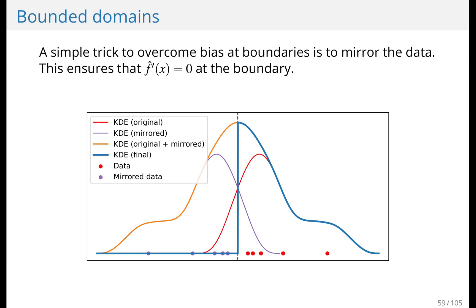Now compare the blue final kernel density estimate with the red one. You see that it's moved some of the density from the left of the boundary to the right of the boundary. So this is a simple trick to ensure that you don't get this bias at the boundary if you have bounded domains.